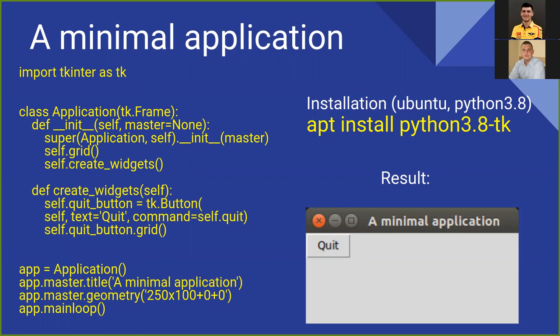You can skip the left and top parameters and specify just width and height — in that case the window will be located in the top-left corner of the screen. For the main program, we initialize the application and execute its main loop method, which waits for mouse and keyboard events.